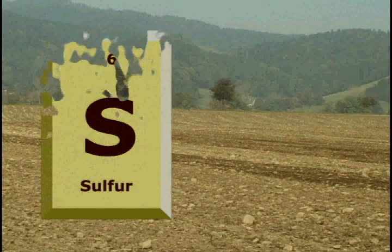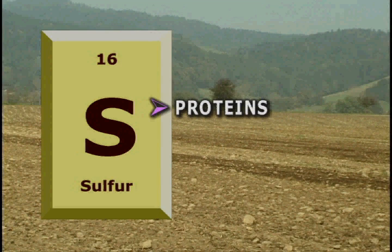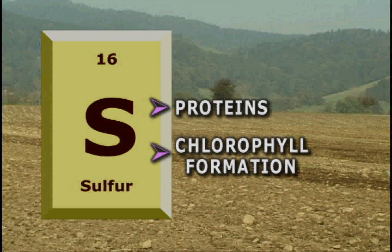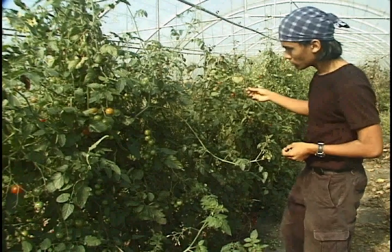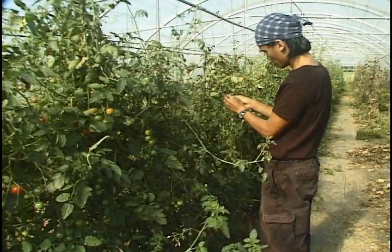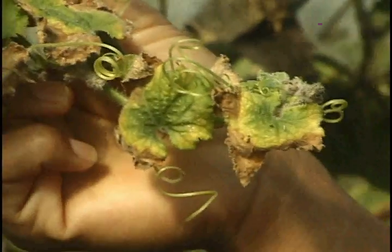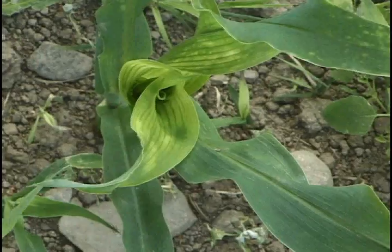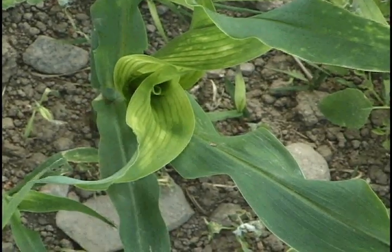Sulfur is an important constituent of some proteins which are needed by plants. Although sulfur is not part of the chlorophyll molecule, it is thought to be important in the formation of chlorophyll. This may be why sulfur deficiency symptoms are similar to those of nitrogen. Sulfur deficiency is expressed as chlorosis, but unlike nitrogen deficiency, this chlorosis is found on young plant tissues.